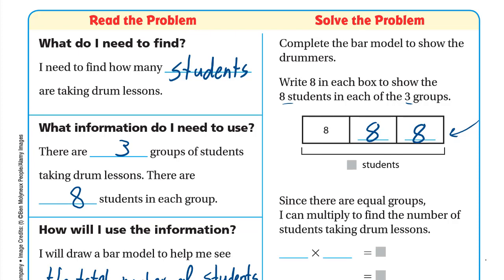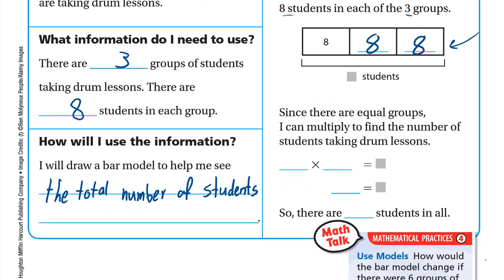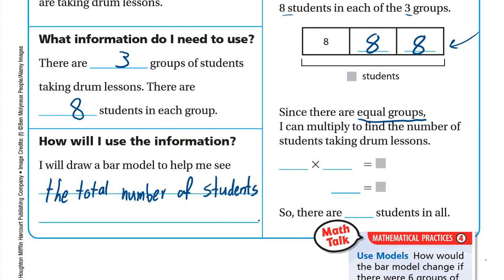Inside each box we have 8 students, so the total is 8 + 8 + 8. Since we have equal groups, we can use multiplication: 3 × 8. It's like adding 8 three times — 8 + 8 = 16, plus 8 more = 24. So 3 × 8 = 24, and there are 24 students in all.